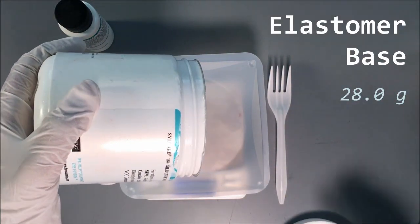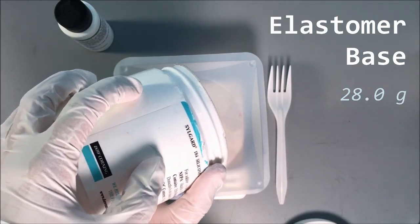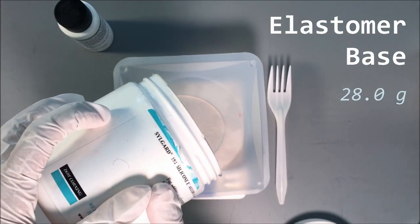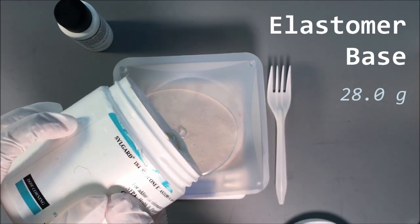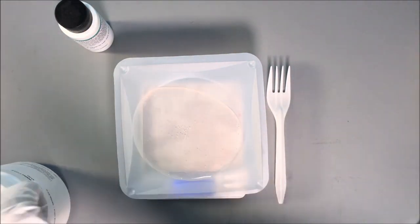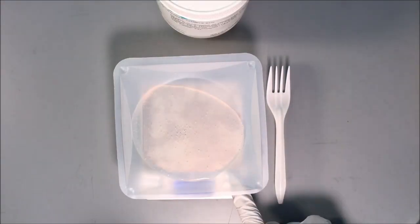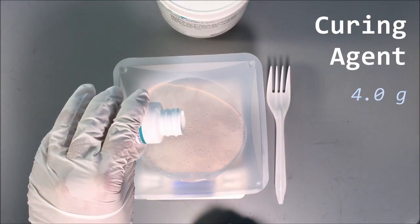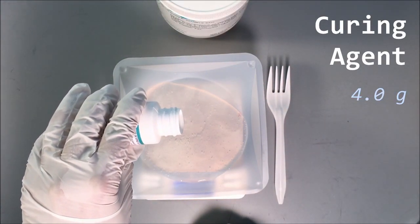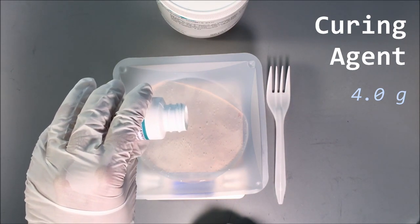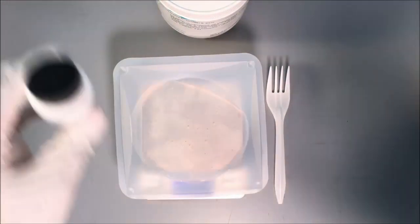Begin by pouring 28 grams of elastomer base into the plastic weighing tray, followed by 4 grams of curing agent. If you would like to adjust the thickness or size of PDMS made, refer to the linked PDF for further instructions.